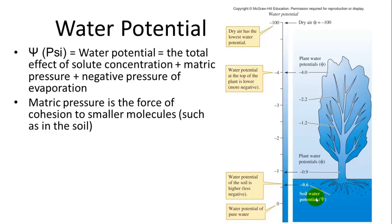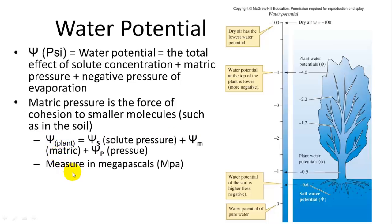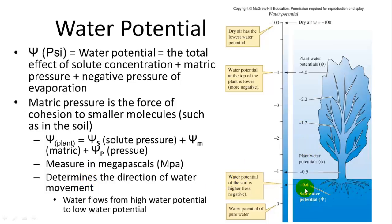All right, so water potential is another way of measuring the loss of water due to plants. And it is abbreviated by this Greek letter psi. So water potential equals the total effect of solute concentrations, which is the effect of osmosis, plus matrix pressure, which is the force of cohesion of two smaller molecules of water, such as in the soil, and the negative pressure of evaporation. So when you put them all together, that's what it looks like. You have these smaller water potentials, which add up to the total water potential in the plant. It's measured in megapascals and determines the direction of water movement. Essentially, water flows from high potential to a low potential. So the lower the water potential, that's where things are going to flow.